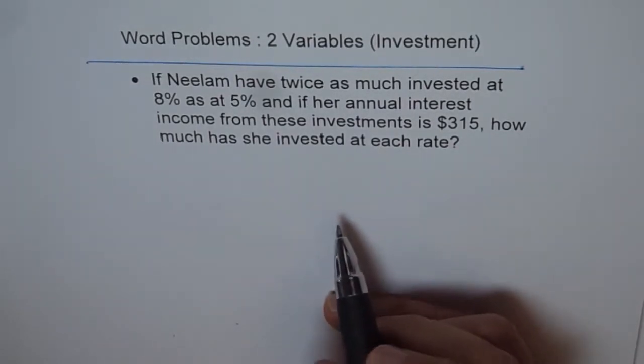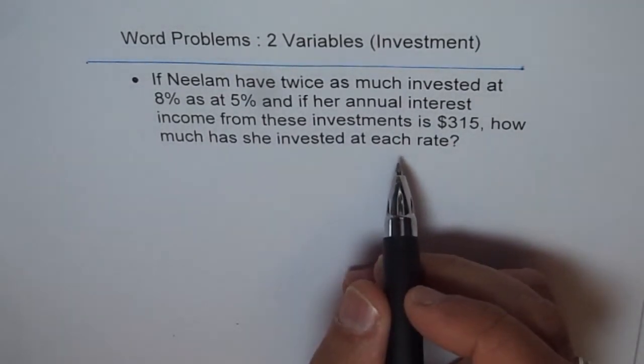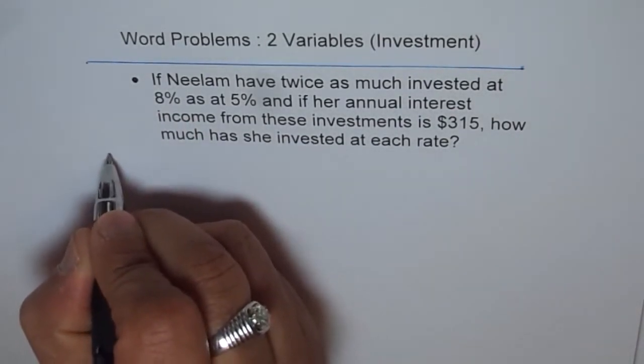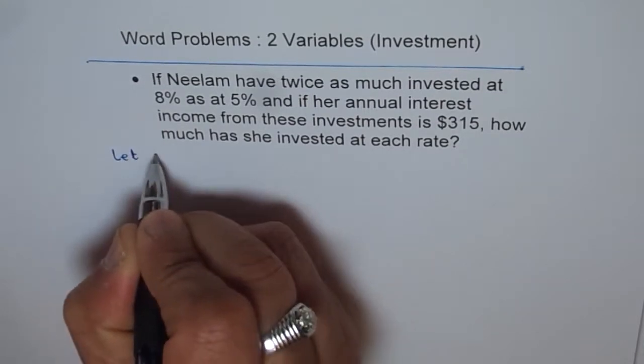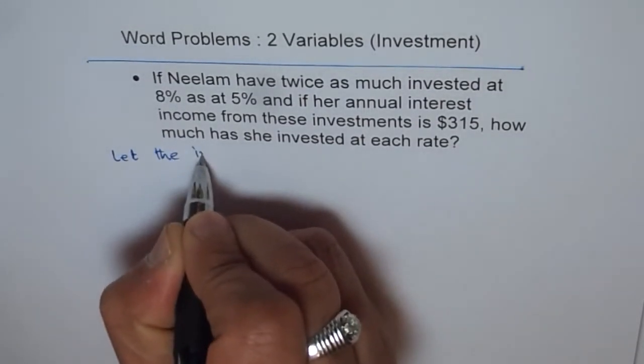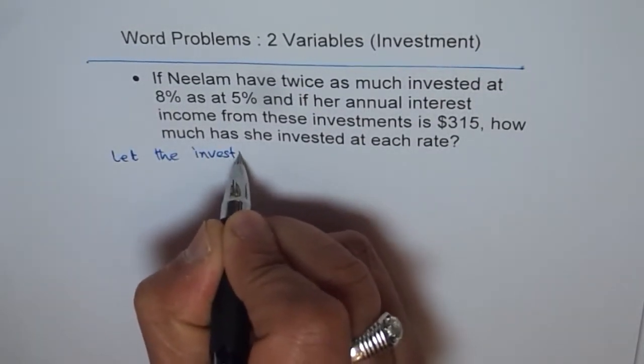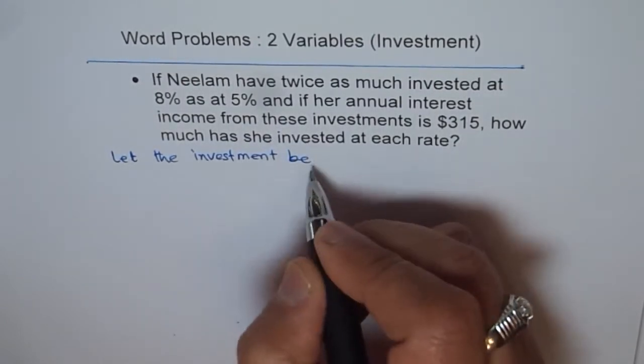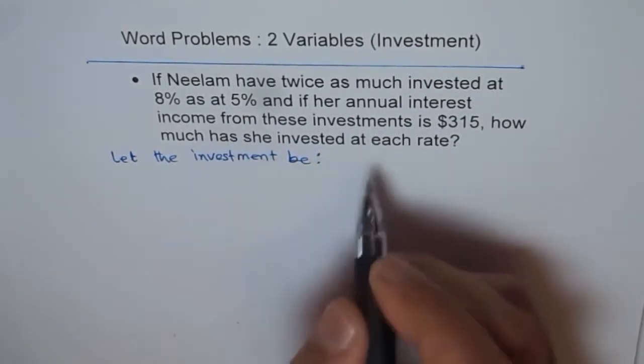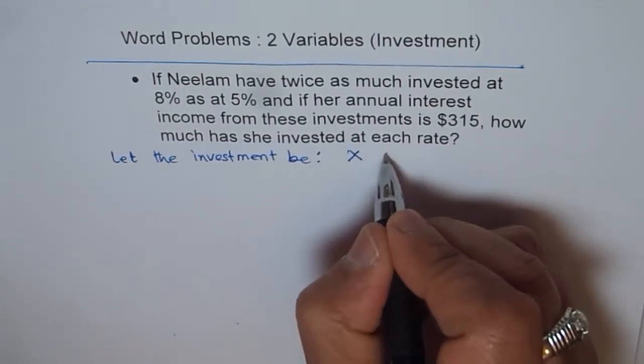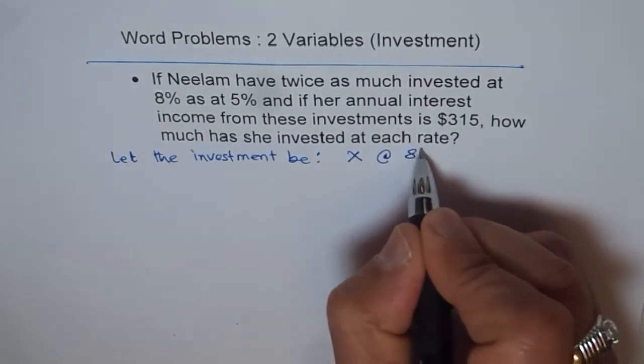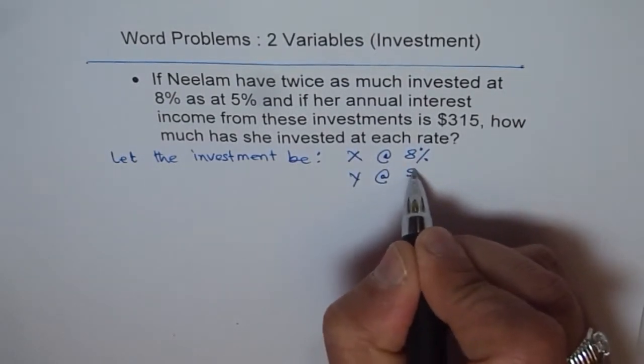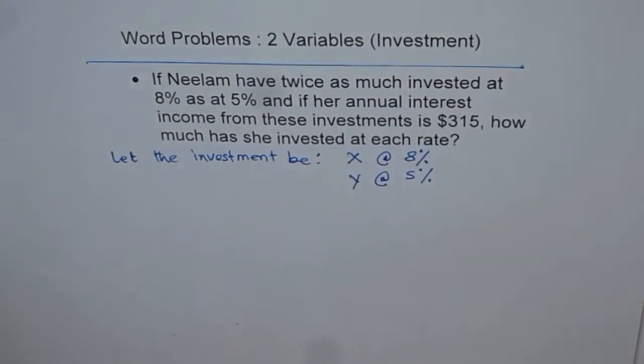Let's assume that X is the amount invested at 8% and Y at 5%. So we will write our let statement. Let the investment be X at 8% and Y at 5%. That is our let statement.